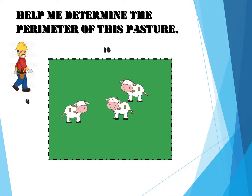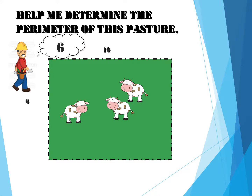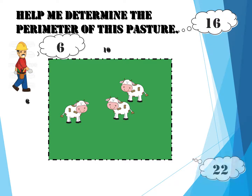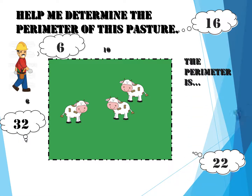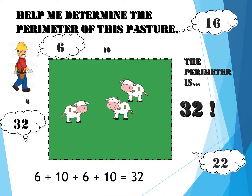Help me find the perimeter of this pasture. They've given us the two sides — they're each six yards. The top and the bottom are ten yards each. Six plus ten is 16, plus six more is 22, plus ten more is 32. So the perimeter is 32. Six plus ten plus six plus ten is 32.